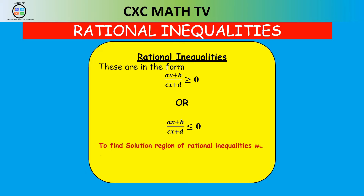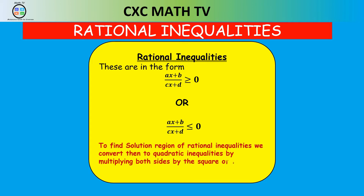We want to make it as short and concise as possible. To find the solution region of a rational inequality, we're going to convert it to a quadratic inequality by multiplying both sides by the square of the denominator.